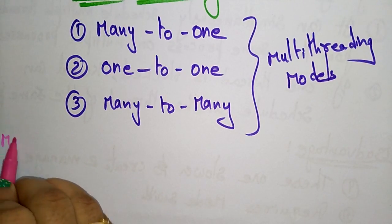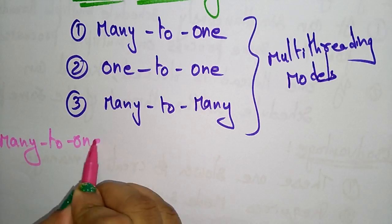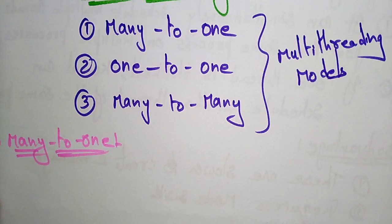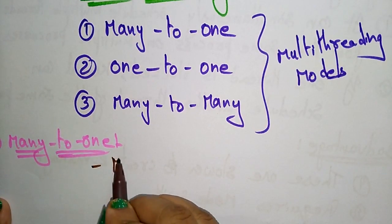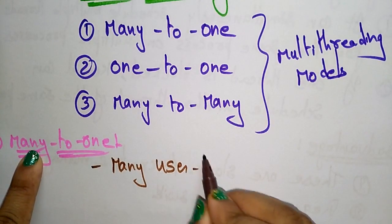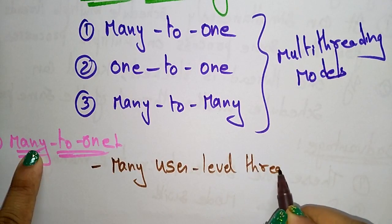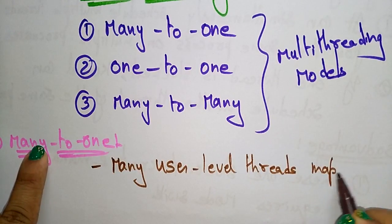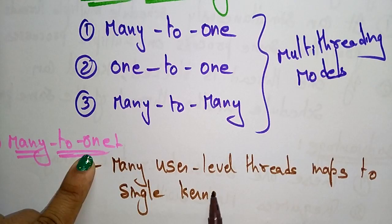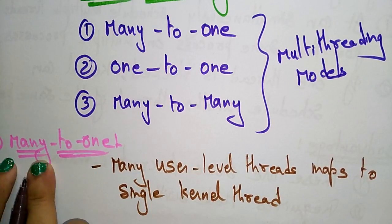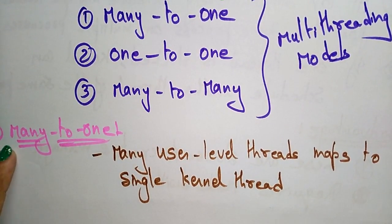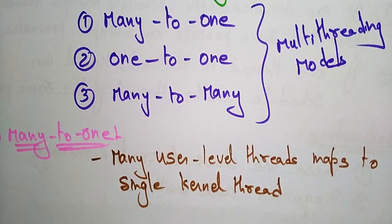The first one is the many-to-one model. Many-to-one means many user-level threads map to one single kernel thread. That is the meaning of this many-to-one — many user-level threads map to a single kernel thread.